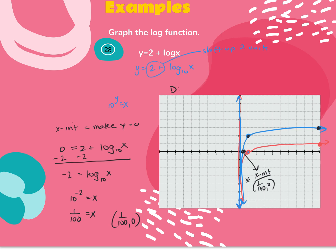For domain and range here: the range is still all real numbers, or negative infinity to positive infinity. This graph shifted up or down, and a vertical shift doesn't change the domain. So the domain remains the same as the basic logarithmic function: 0 to positive infinity.